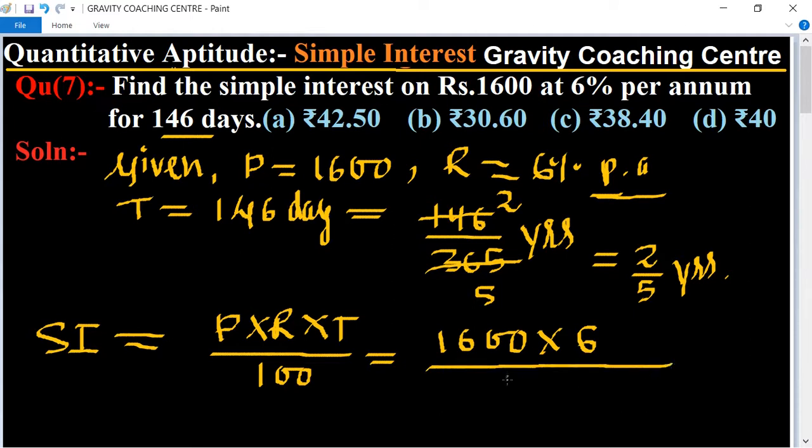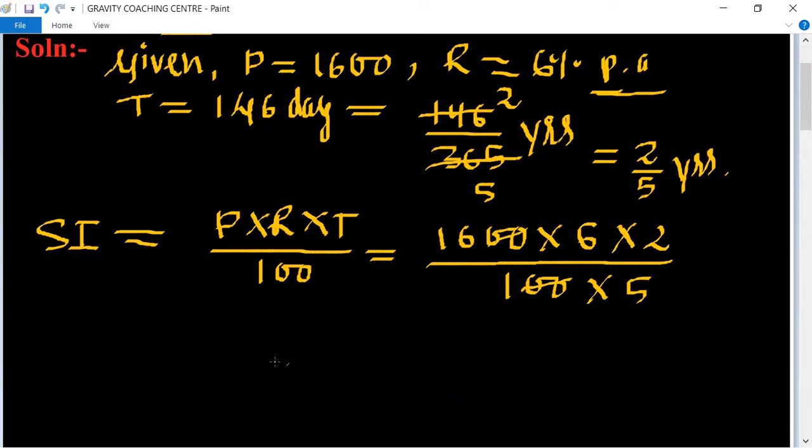Time equal to 2 upon 5. Double zero, double zero cancel. Its product is 192 upon 5.